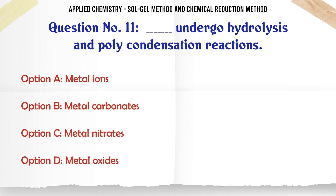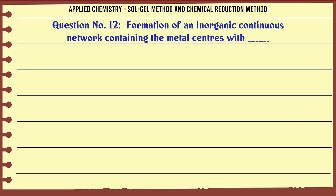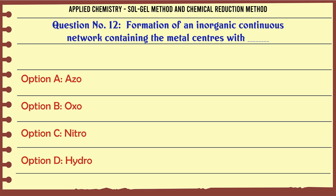Which of the following undergo hydrolysis and polycondensation reactions? A. Metal ions, B. Metal carbonates, C. Metal nitrates, D. Metal oxides. The correct answer is Metal oxides.